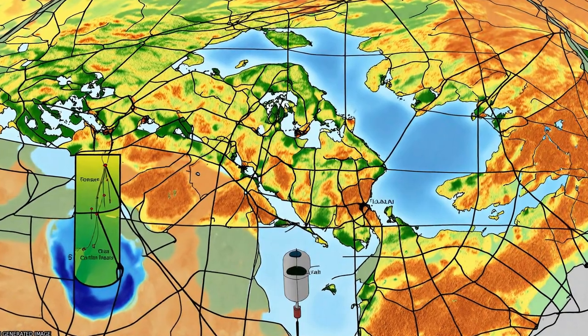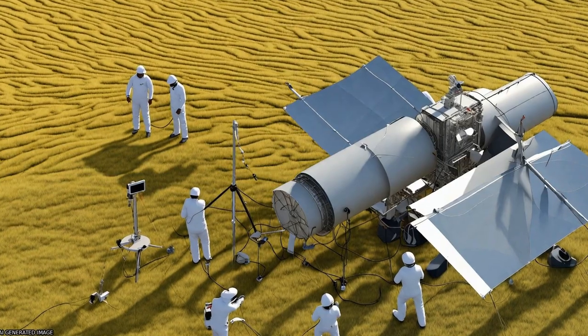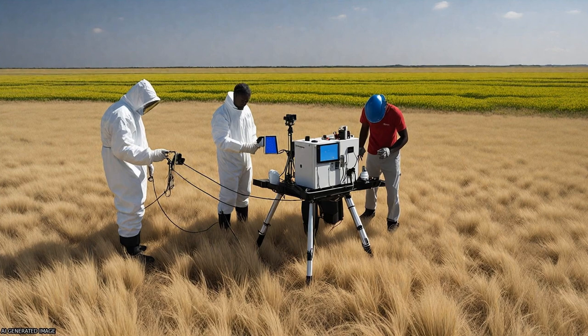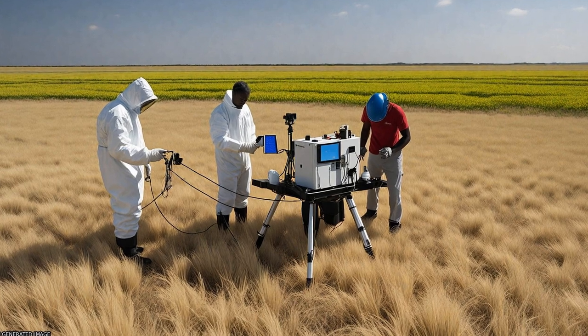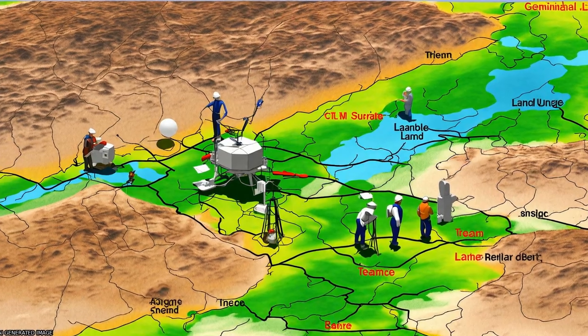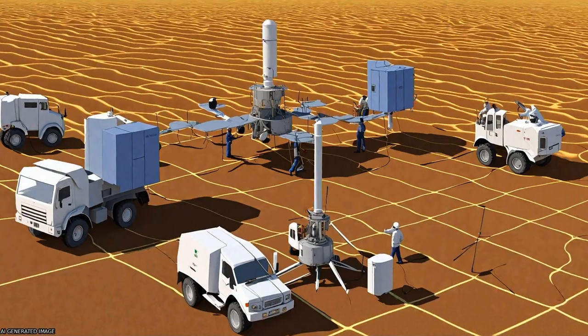Thermal Infrared (TIR) Remote Sensing of Land Surface Temperature (LST) is a valuable tool for estimating evapotranspiration (ET) and detecting drought conditions.